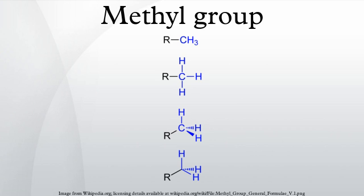Chiral methyl: in the special case where one hydrogen is replaced by deuterium and another hydrogen by tritium, the methyl substituent becomes chiral. Methods exist to produce optically pure chiral methyl compounds, for example chiral acetic acid. Through the use of chiral methyl groups, the stereochemical course of several biochemical transformations has been elucidated.